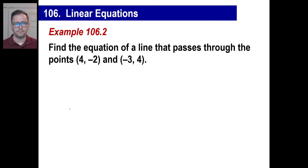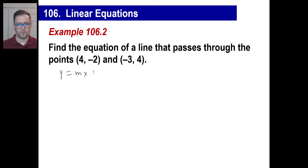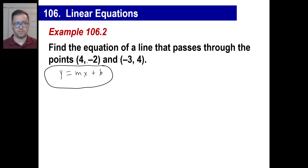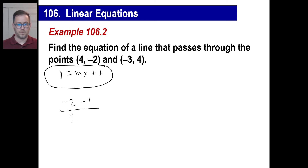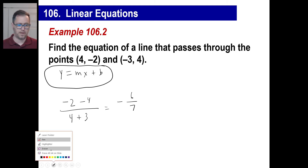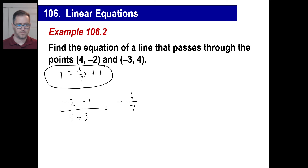Let's try another one. Copy this down if you need to. No picture this time, right? We know what to do: y equals slope x plus y-intercept. It passes through those points. We know how to find the slope — the Y's subtracted over the X's subtracted. Starting with negative 2 minus negative 4, that's negative 2 plus 4. And since I started with negative 2, I'll start with 4 on the bottom: 4 minus negative 3 is plus 3. So the slope is negative 6 over 7.